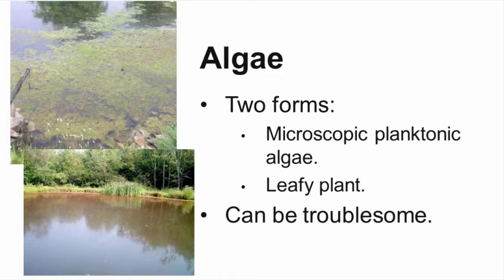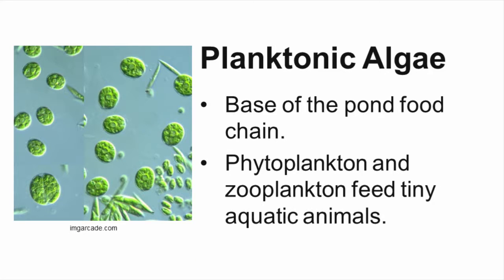Algae is the final category of aquatic plants, and to many pond owners the most troublesome. Algae can present itself in several ways in the pond, either as the microscopic planktonic algae or as an actual leafy plant that can be seen growing in the pond. Planktonic algae are the base of a pond food chain and provide food for fish and other aquatic life. This tiny algae can give the water a brownish or greenish murky appearance, and can appear suddenly in a pond under ideal conditions of nutrients and sunlight. This rapid appearance is called an algae bloom.